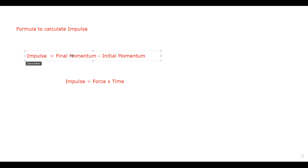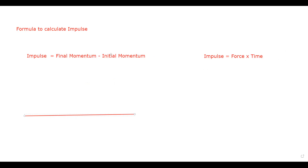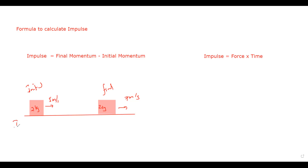Example: an object of mass 2 kilograms moves at 5 meters per second and changes speed to 7 meters per second. The first value is initial and the second is final. Since speeds are given, we calculate initial momentum: 5 multiplied by 2 equals 10 kilogram meters per second.